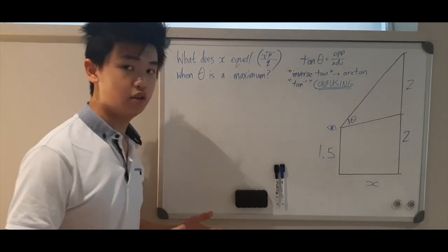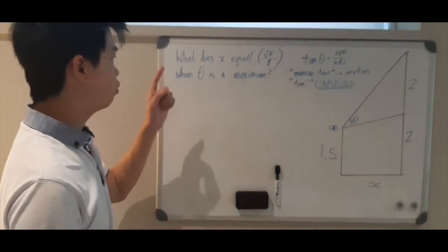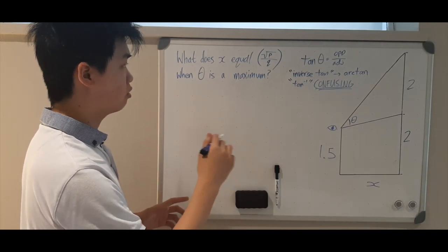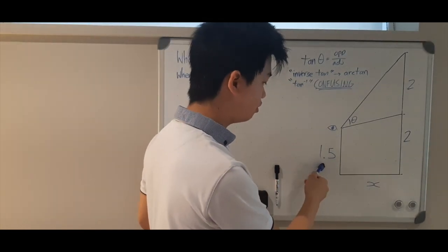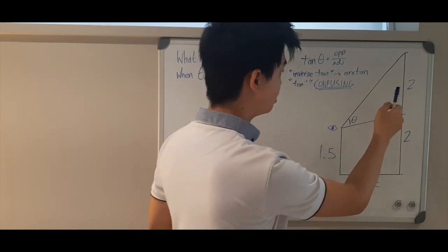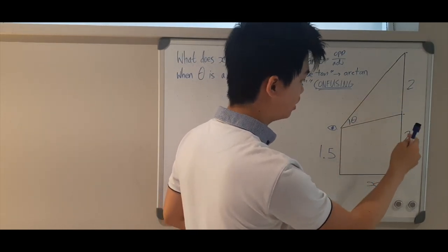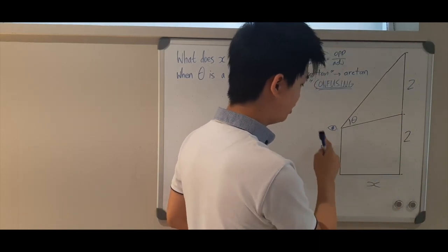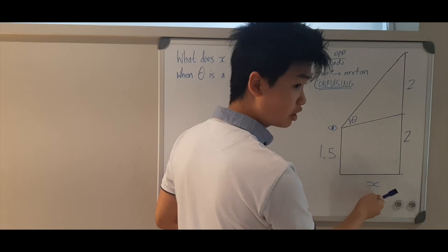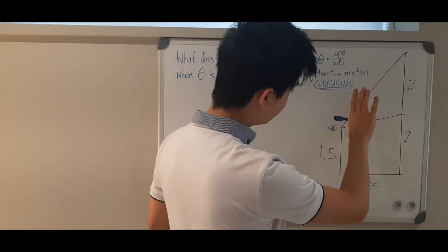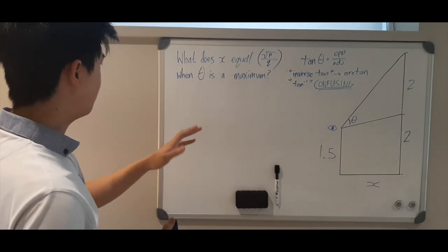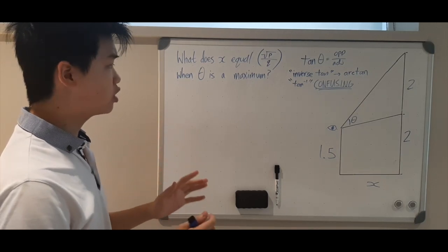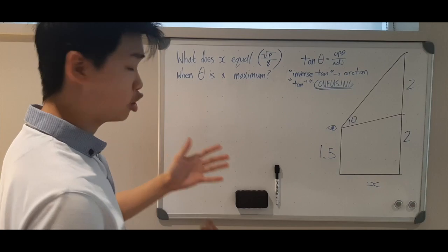Hello. We have a question that involves a little bit of trigonometry and some calculus. We have to find what x equals in the form square root of p over q when theta is a maximum. We have an observer that is 1.5 units above the ground, a painting of height 2 units that is 2 units above the ground, the observer and the wall are x units apart, and theta is the angle in which the observer sees the painting. To find what x equals when theta is maximum, first we have to find what theta is in terms of x.